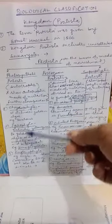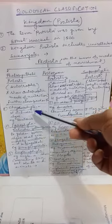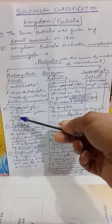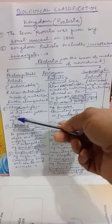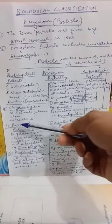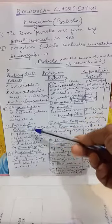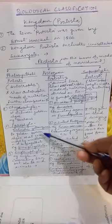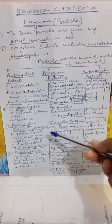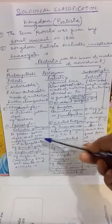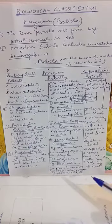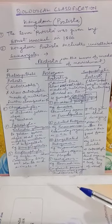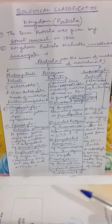The first category is chrysophytes — 'chryso' means golden — so this group includes golden algae, with diatoms as an example. The second is pyrrophyta, which includes yellow-green to golden-brown algae that are mostly unicellular and biflagellates. Examples of pyrrophyta are dinoflagellates.